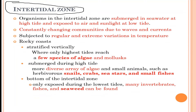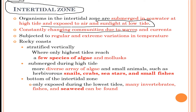Let's talk about the intertidal zone. Organisms in the intertidal zone are submerged in sea water at high tide and exposed to air and sunlight at low tide. These are constantly changing communities due to waves and currents, subjected to regular and extreme variations in temperature, and are present at rocky coasts, stratified vertically.